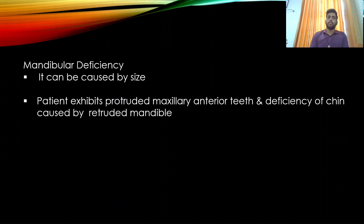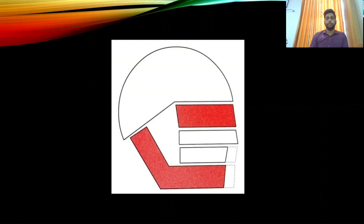In mandibular deficiency, the patient exhibits protruded maxillary anterior teeth and a deficient chin caused by the retruded mandible. The diagrammatic representation shows a retrognathic mandible with an orthognathic maxilla.